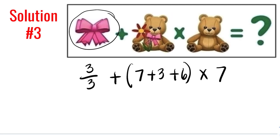Simplifying this expression, we need to simplify first the parentheses. 7 plus 3 plus 6 is equal to 16. So we have 3 over 3 plus 16 times 7. 3 over 3 is 1, plus 16 times 7 is 112. So the answer is 113.